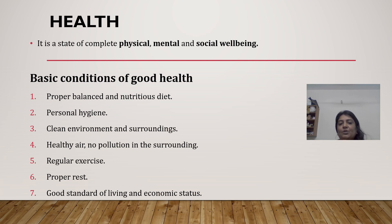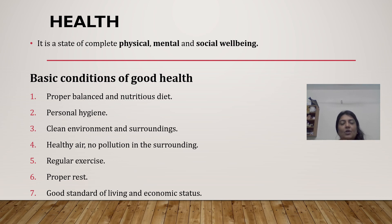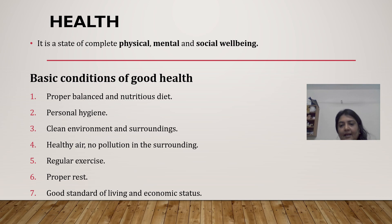The seventh condition is a good standard of living and economic status. A good standard of living consists of individuals having basic things such as food, shelter, social safety and interaction, all of which contribute to well-being. It is considered to be a decent living standard. These are the basic conditions of good health.